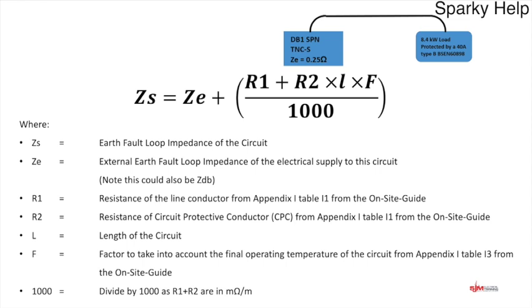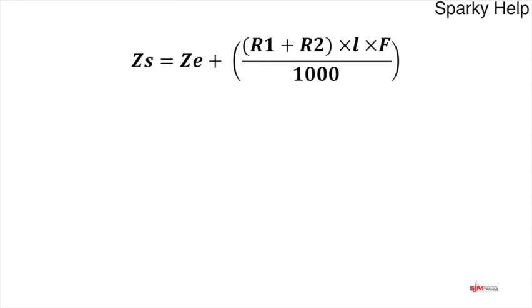We divide by 1,000 because R1 and R2 values are in milliohms, and milli is a thousandth. The full formula is: ZS = ZE + (R1 + R2) × L × F ÷ 1000. The brackets are critical — we only apply the length, factor, and division by 1,000 to R1 and R2. Do not multiply ZE by the length or any factors, as ZE is external to our circuit.